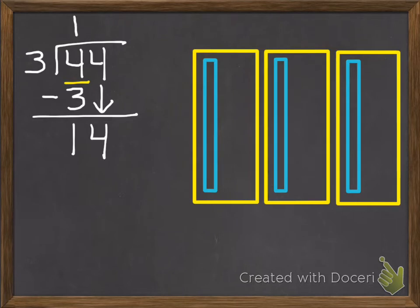So now we're going to give those 14 ones out to those 3 groups. So how many can I give each one? So I know 3 would be 1, 6 would be 2, 9 would be 3, 12 would be 4, 15 would be 5. I don't have 15. So they're each going to get 4.